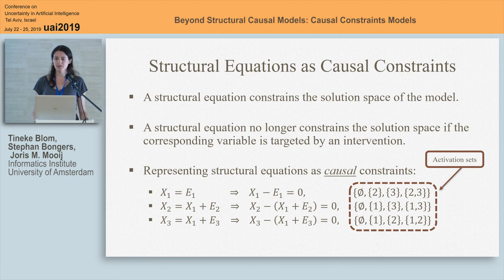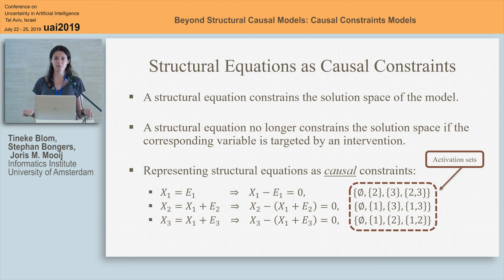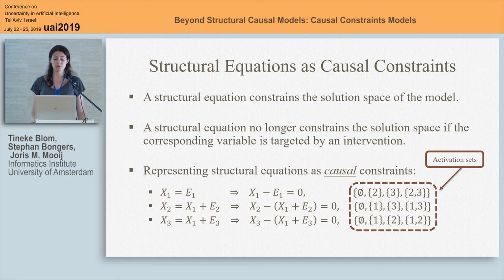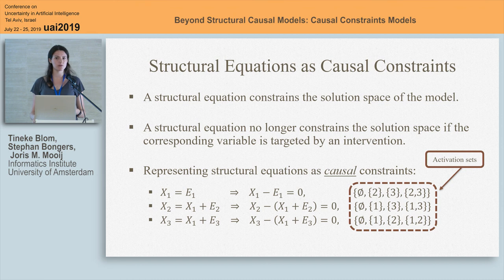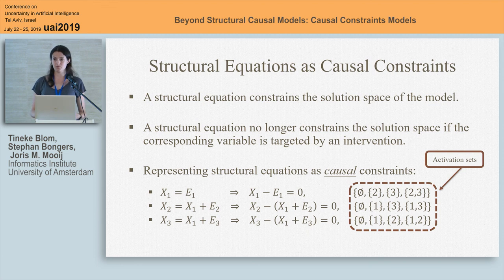This sets the stage to think about structural equations as causal constraints. A structural equation constrains the solution space of the model as long as the corresponding variable is not targeted by an intervention. This is implicit in how we write structural equations, but we can also make it explicit. For example, we might explicitly write the structural equation X1 equals E1 as the constraint X1 minus E1 equals 0, and explicitly denote that this constraint is active under interventions on X2 or other variables.